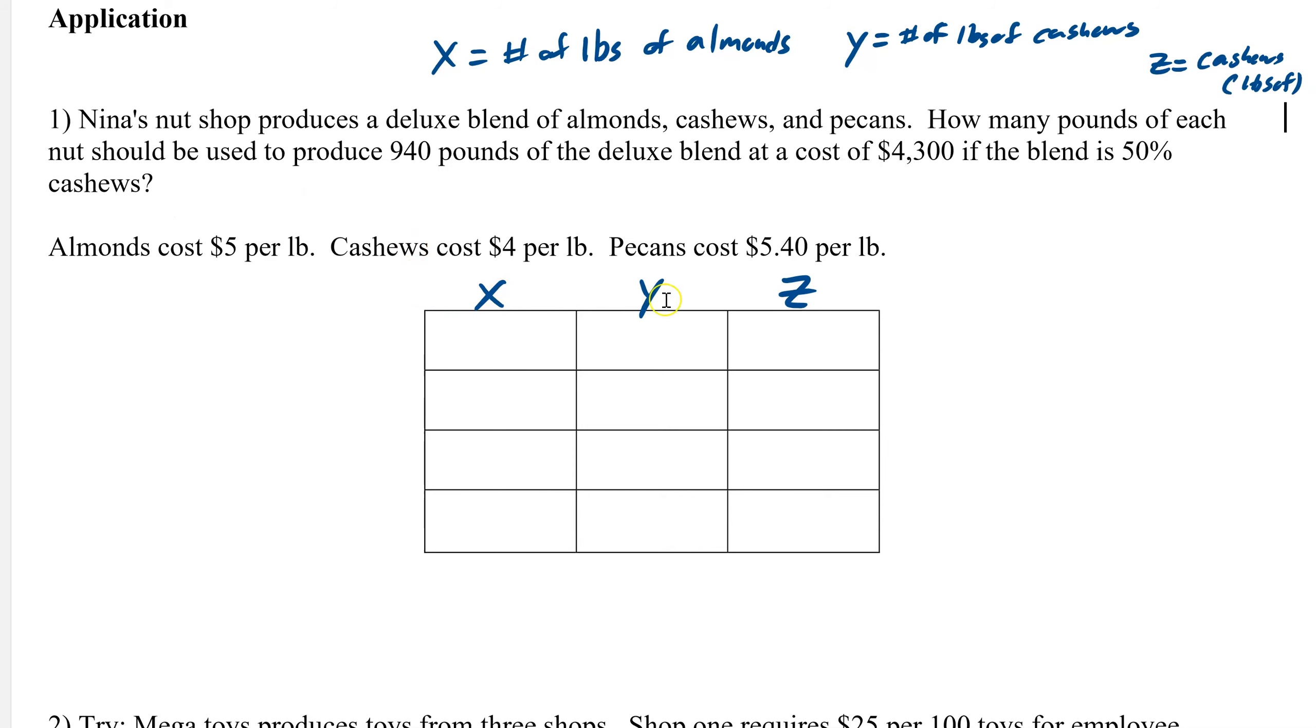Now our equations have to involve these X, Y, and Z. It says should be used to produce 940 pounds total, so X plus Y plus Z equals 940. Since we have three variables, we need three equations. The next one is the cost. So $5 for the almonds plus $4 for the cashews and $5.40 for the pecans. That has a total cost of $4,300.